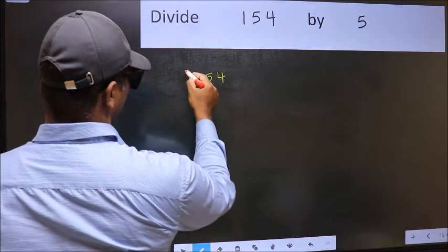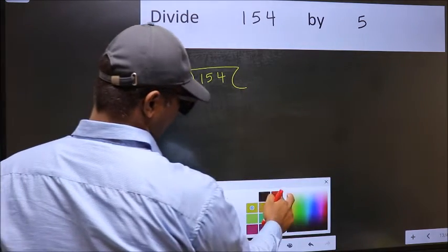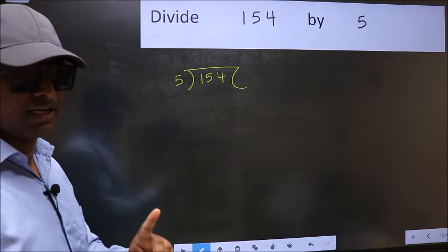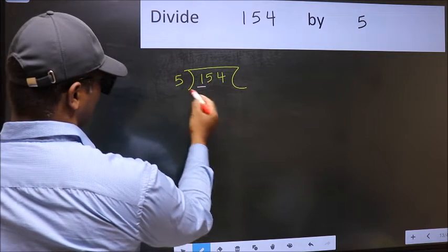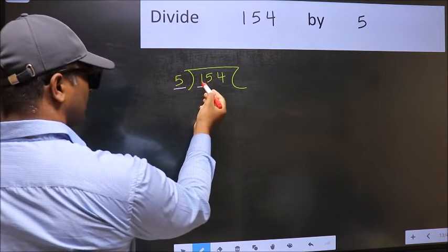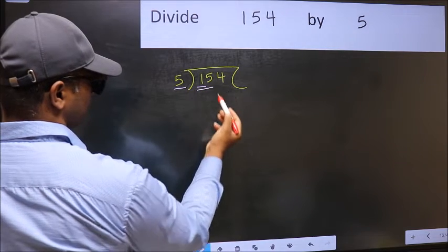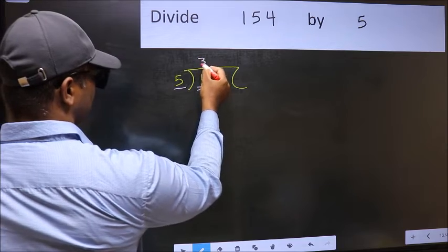154 and 5 here. This is your step 1. Next, here we have 1 and here 5. 1 is smaller than 5, so we should take two numbers, 15. When do we get 15 in the 5 table? 5 threes are 15.